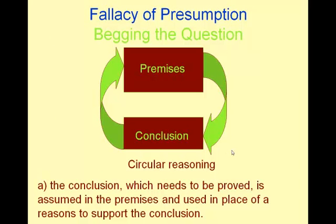With the fallacy of presumption, the first form is called begging the question, and it is circular reasoning. The conclusion is actually used as a premise. The conclusion, which needs to be proved, is assumed and used in place of reasons to support it.